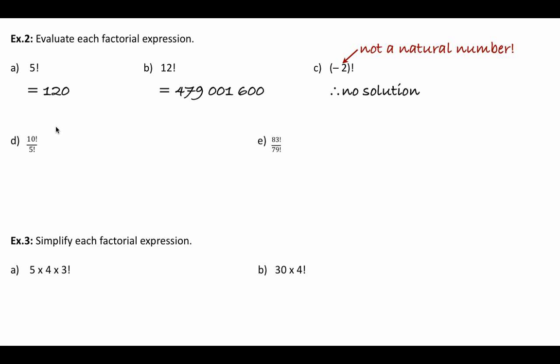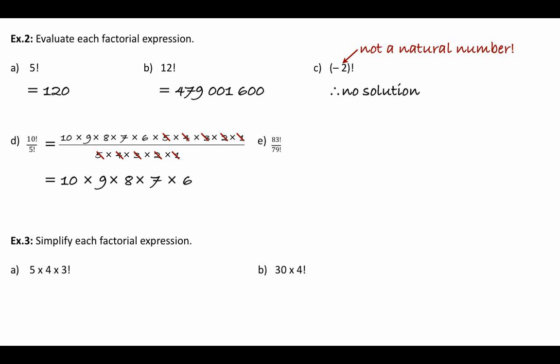If we say 10 factorial divided by 5 factorial, your calculator gives an answer right away. Written out, that's 10 times 9 times 8 times 7 times 6 times 5 times 4 times 3 times 2 times 1, divided by 5 times 4 times 3 times 2 times 1. We can simplify by cancelling top and bottom, leaving just 10 times 9 times 8 times 7 times 6, which gives 30,240.